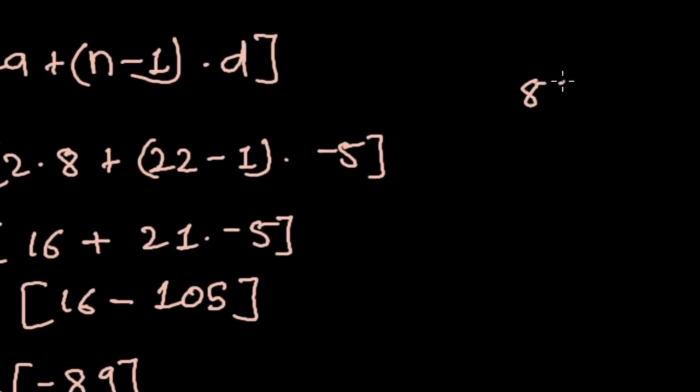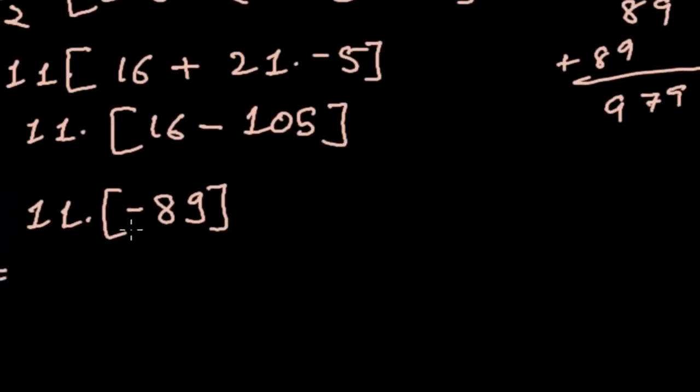89 multiply by 11. So I'm sorry, actually I have to add this. 9, 8. Now I'm going to add so 9 and 8 plus 9 again, it will be 17 carry 1, so it will be 979. So 11 times 89 it will be negative 979 answer.